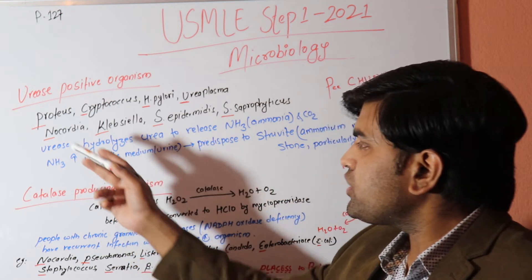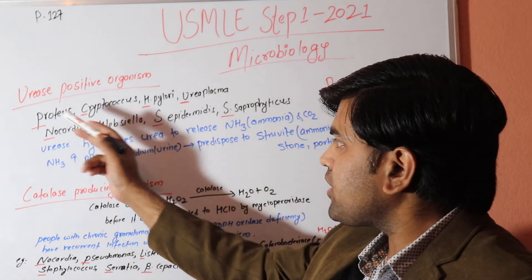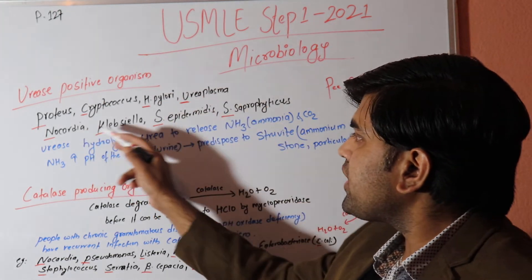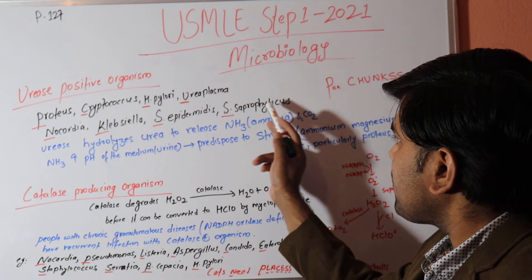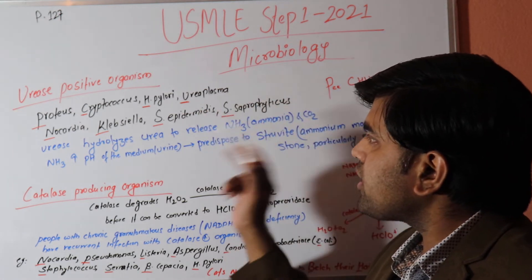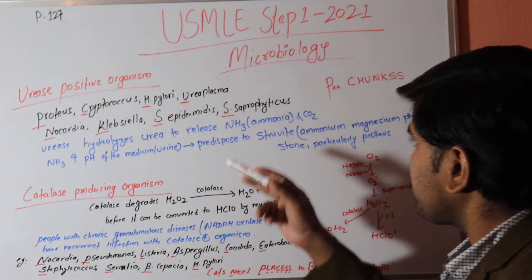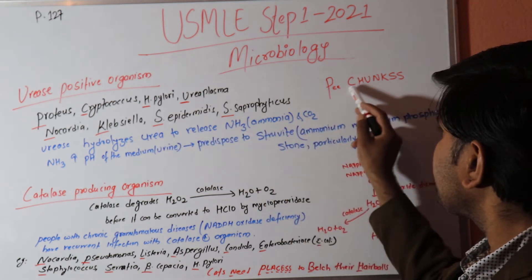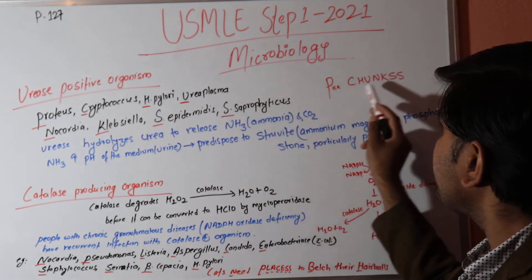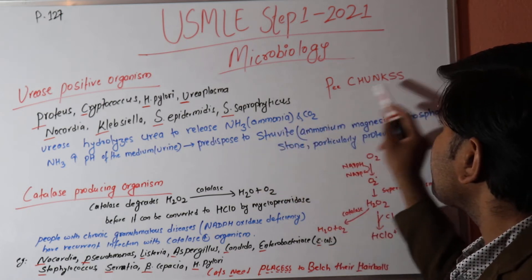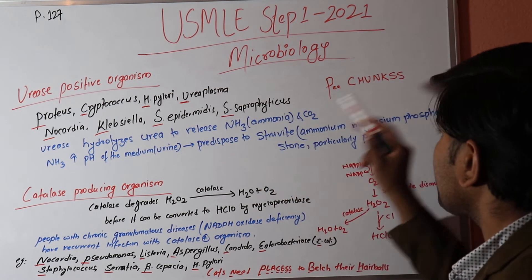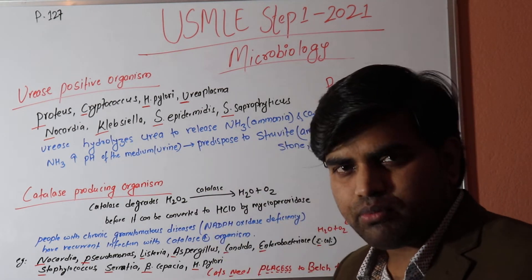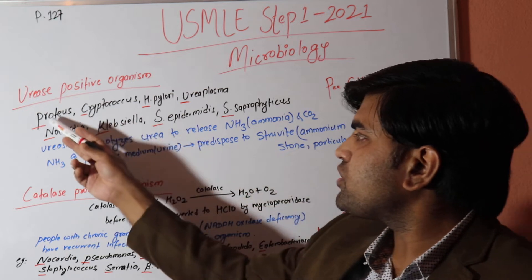The urease-positive organisms include Proteus, Cryptococcus, H. pylori, Ureaplasma, Nocardia, Klebsiella, Staphylococcus epidermidis, and Staphylococcus saprophyticus. We can remember these with the mnemonic 'PEACH N KISS': P for Proteus, E for Ureaplasma, A for H. pylori, C for Cryptococcus, H for H. pylori, N for Nocardia, K for Klebsiella, S for S. epidermidis, S for S. saprophyticus.